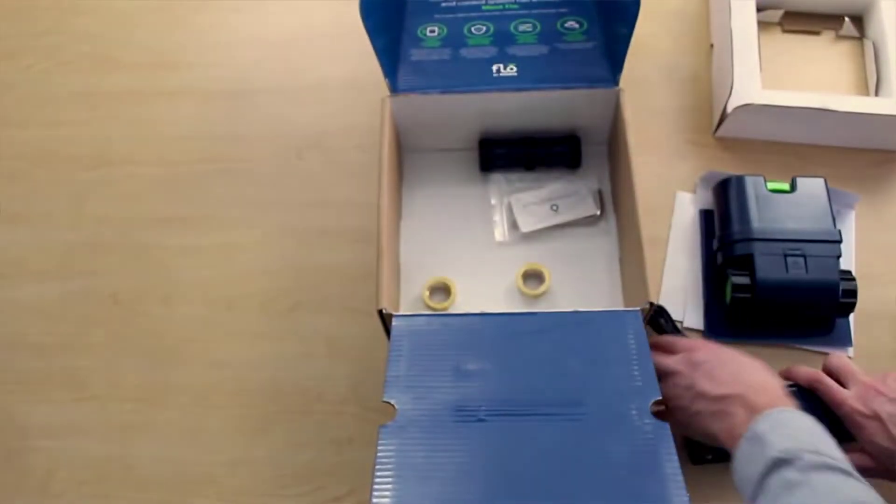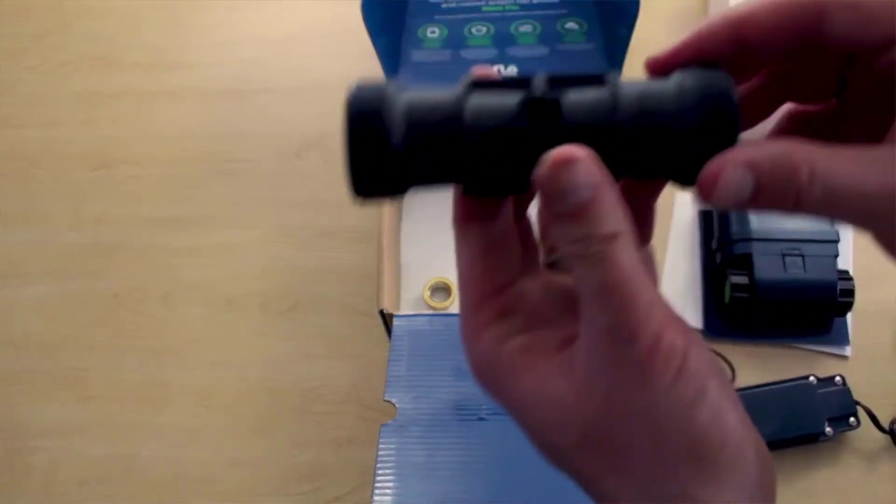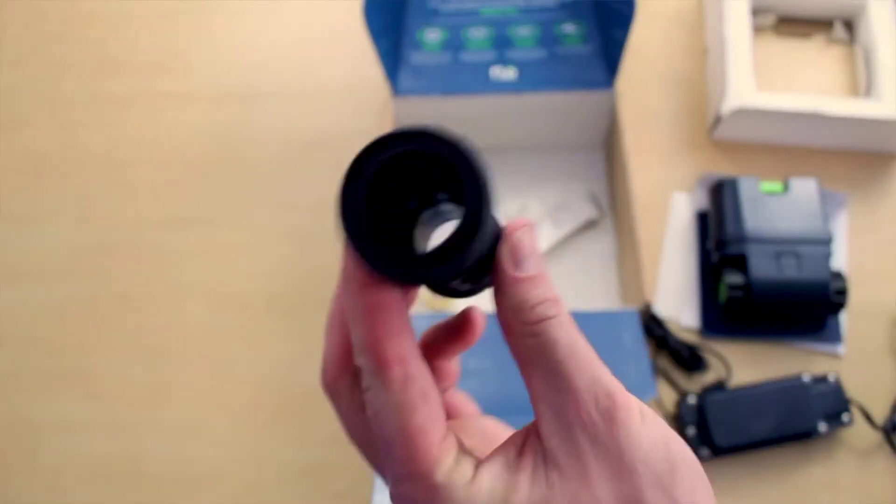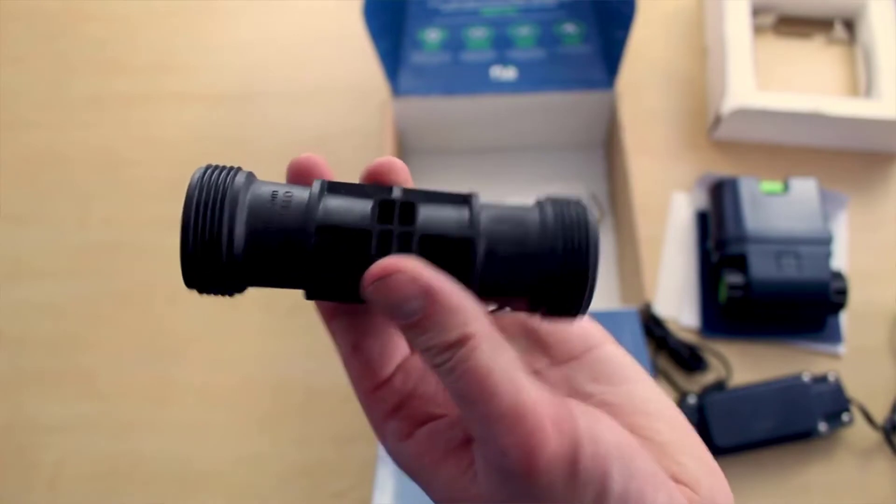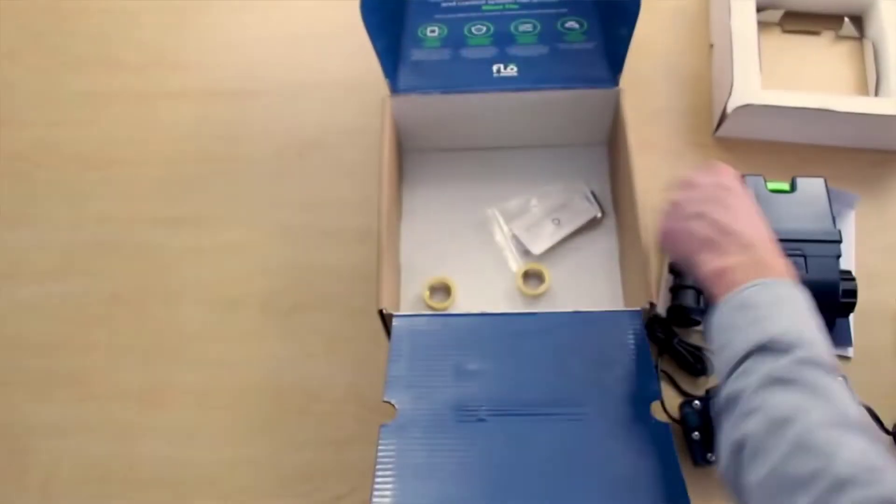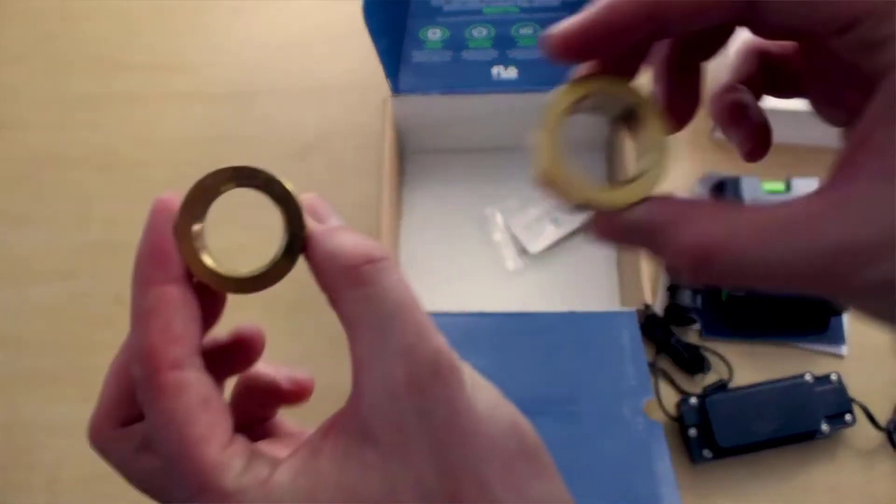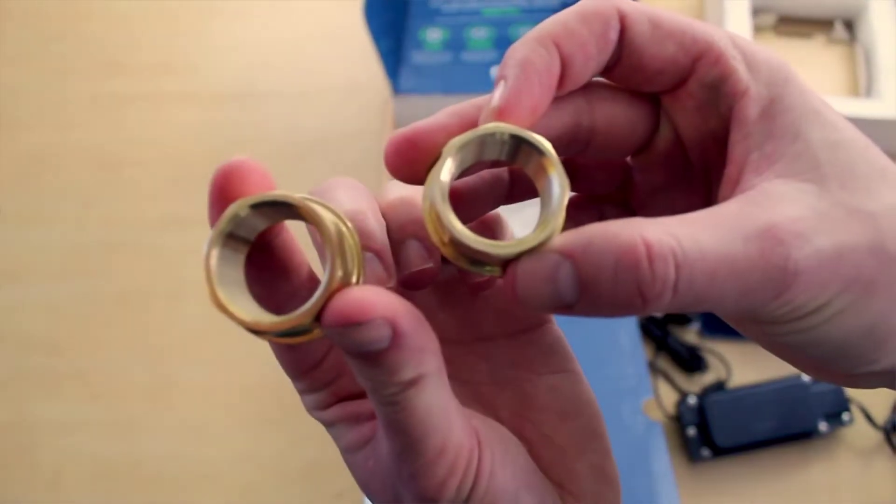It'll also alert you via the app that it uses that there is a water leak and we've shut off the water. You can also turn your water off and on remotely through your smartphone too. Everything is monitored through this app.